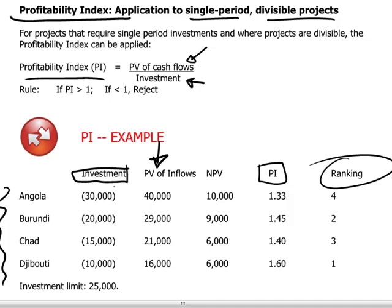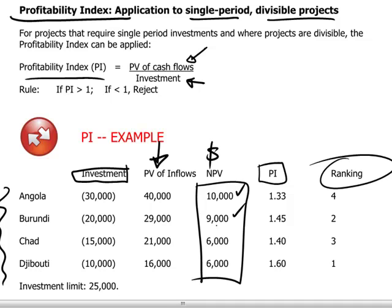Look at how the ranking works in this particular case. We have four investments. If we were to rank these by net present values, Angola has the highest ranking and Burundi has the next based on dollar NPVs. However, if we rank these according to the PI — where the amount invested is taken into account — the Angola investment, while it has the highest NPV of $10,000, requires an investment of $30,000.